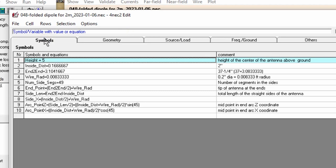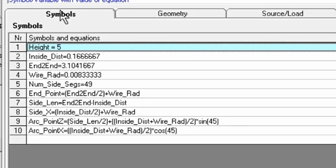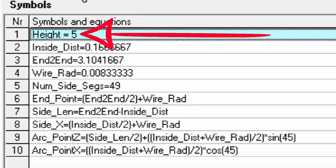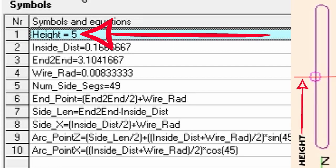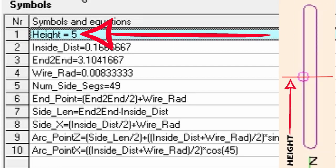Now we can click on the symbols tab and walk through the definitions that make this model work. All of the dimensions that I will be talking about here are in feet, which leads to some pretty funky looking numbers. At the very top is height, which is the antenna's height above ground. This is the height of the midpoint of the antenna. The antenna is vertically oriented along the Z axis.